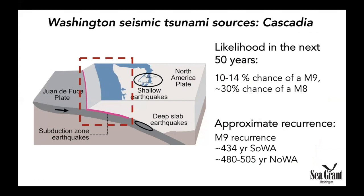First I'll talk about Cascadia. Cascadia earthquakes occur at the interface between the subducting oceanic crust of the Juan de Fuca plate and the overlying continental crust of the North America plate. We know that in the next 50 years there's about a 10 to 14 percent chance of a magnitude 9 great earthquake and about a 30 percent chance of a magnitude 8 earthquake. These magnitude 9 earthquakes recur about every 430 years for the southern part of the Washington coastline to about every 500 years for the northern part, because there are more earthquakes in the southern part of Cascadia.